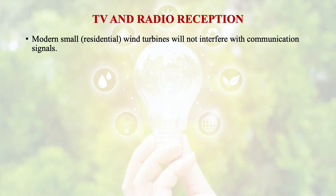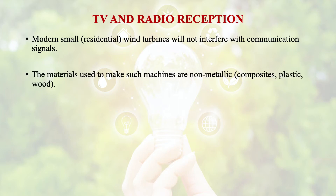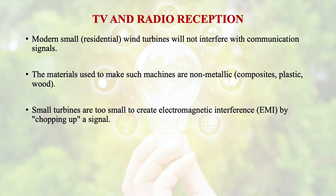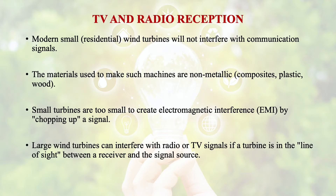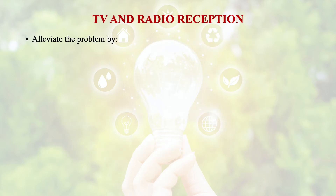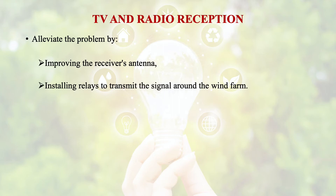Regarding TV and radio reception: modern small wind turbines will not interfere with communication signals as the materials used to make them are non-metallic. Some turbines are too small to create electromagnetic interference. However, large wind turbines can interfere with radio or TV signals if the turbine is in the line of sight between the receiver and the signal source. To alleviate this problem, we could improve the receiver's antenna or install relays to transmit the signal around the wind turbine. So all the limitations can be overcome.